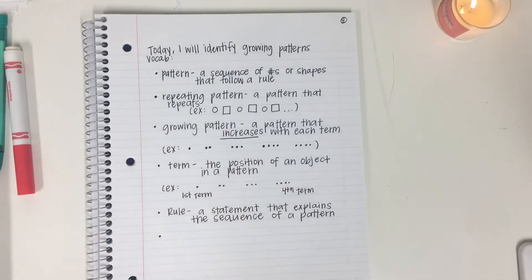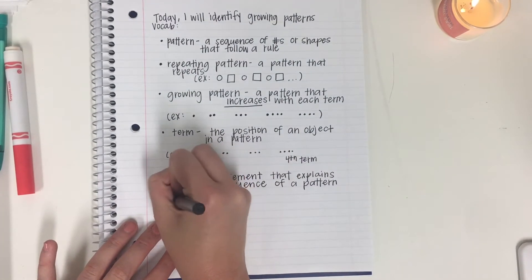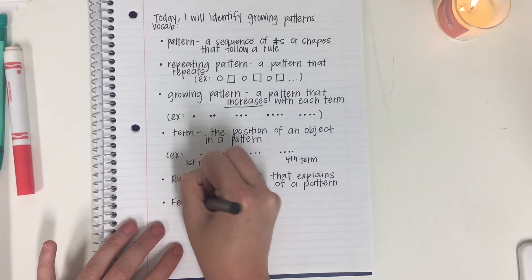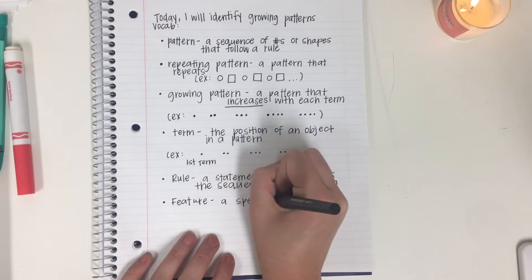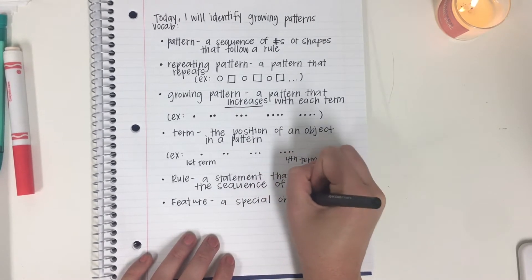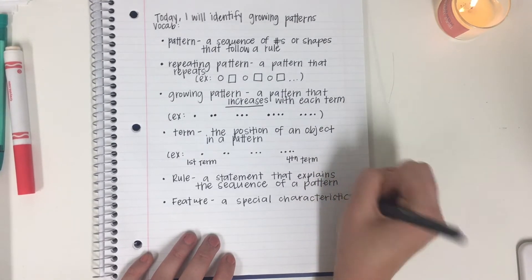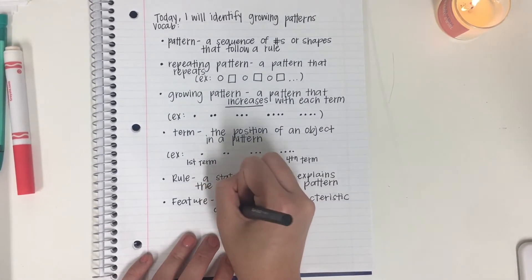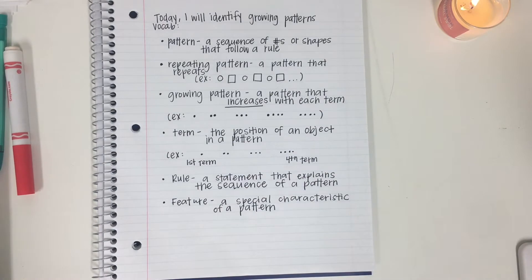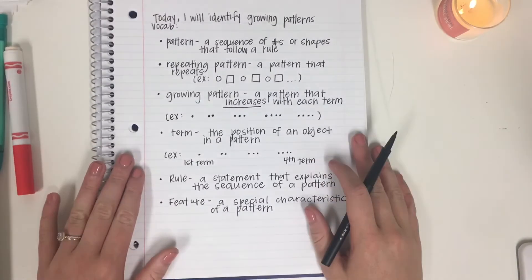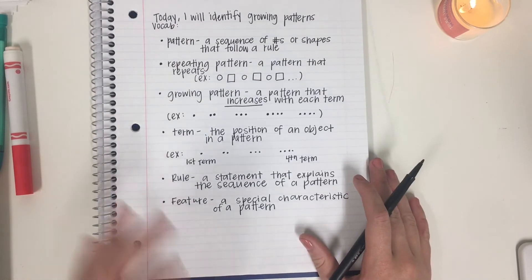The last word that we have today — I'm sure your hand is hurting, my hand is kind of hurting — is feature. A feature is a special characteristic of a pattern. Take a breath, that's a lot of new words and we're really going to practice and dive into it more tomorrow, but I just want us to get familiar with those words.